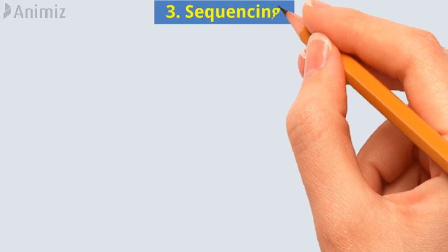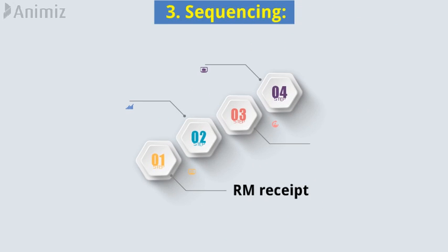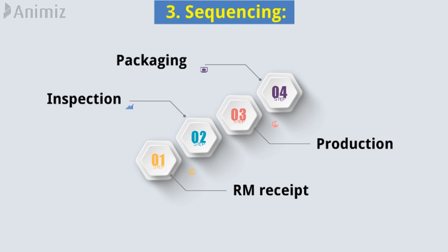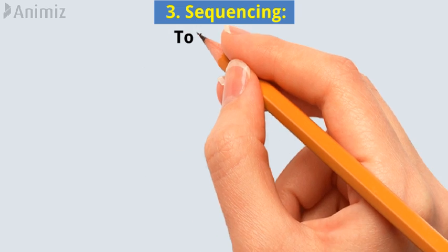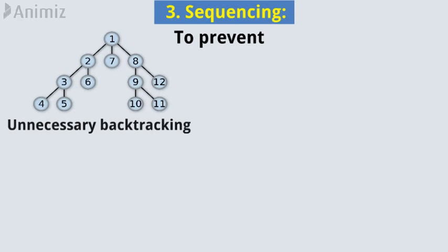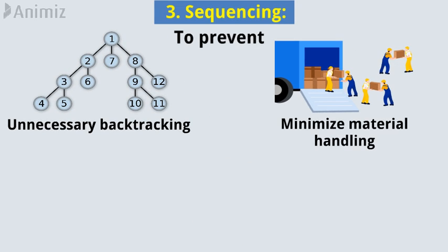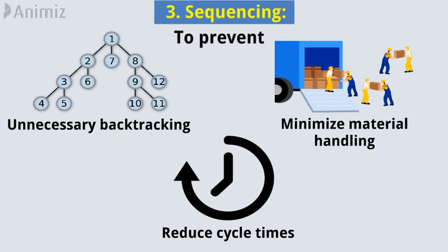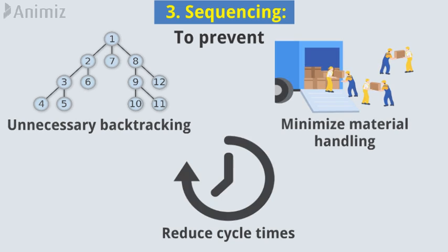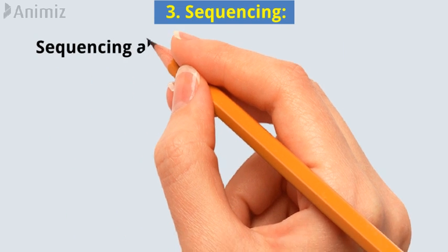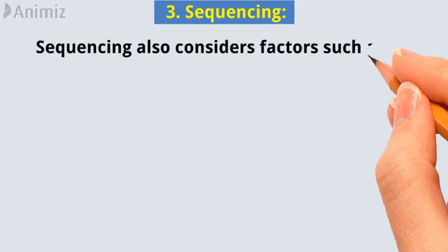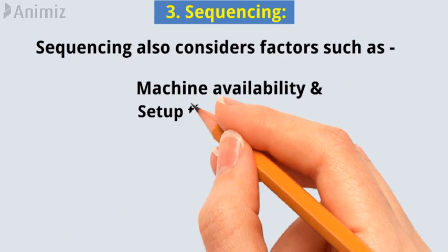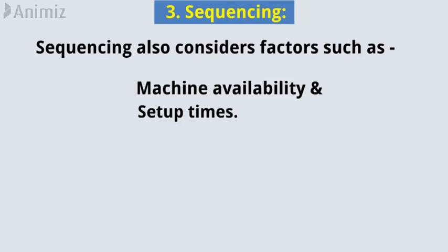3. Sequencing: Determining the optimal sequence of operations is crucial to prevent unnecessary backtracking, minimize material handling, and reduce cycle times. Sequencing also considers factors such as machine availability and setup times.